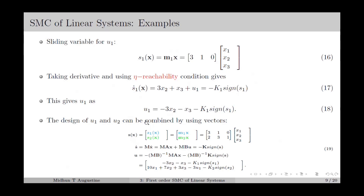The design of u₁ and u₂ can be combined using vectors, in which we define the switching function S(x) with s₁ and s₂ as the two sliding variables, equal to M₁x and M₂x respectively, where M₁ and M₂ are the two row vectors. We have S-dot equal to MAx plus MBu, which should equal minus k sign(S) to satisfy the eta reachability condition. Solving for u gives the control input.